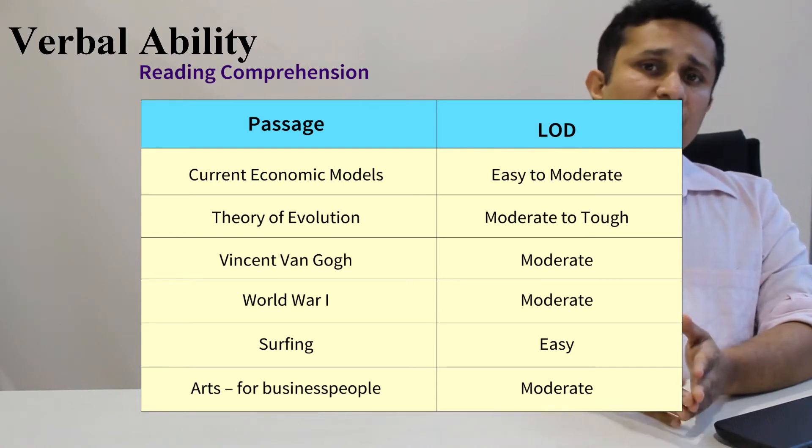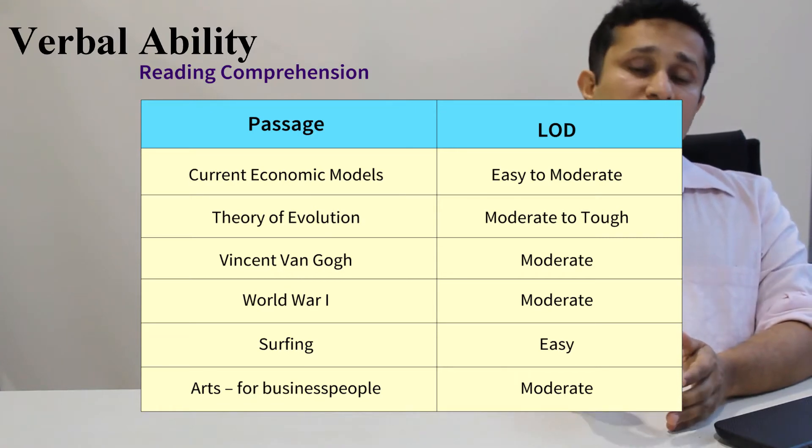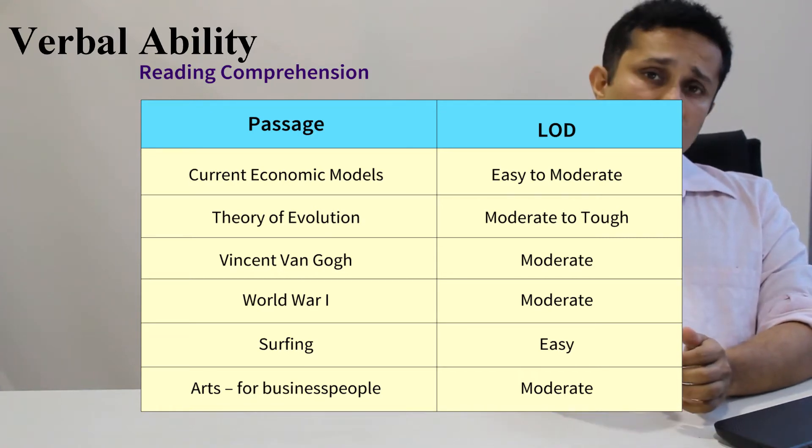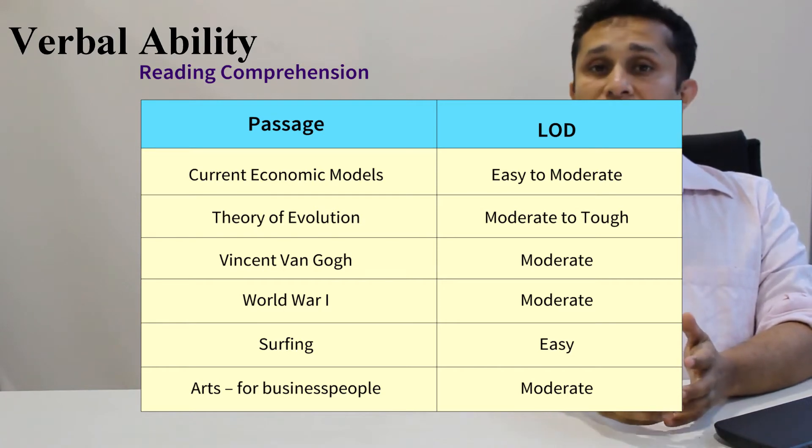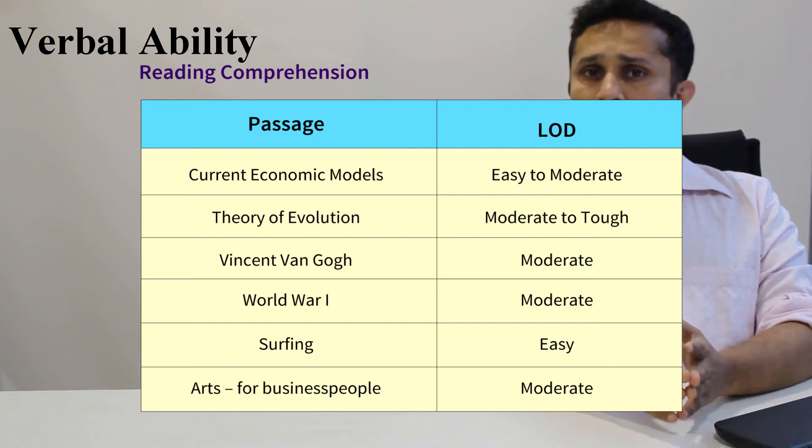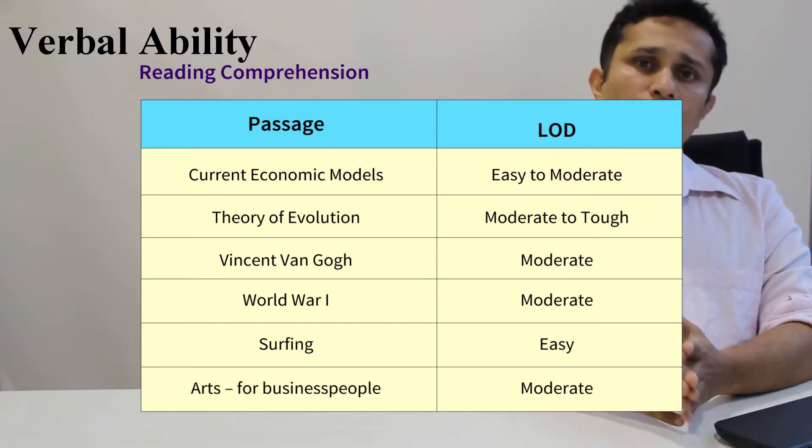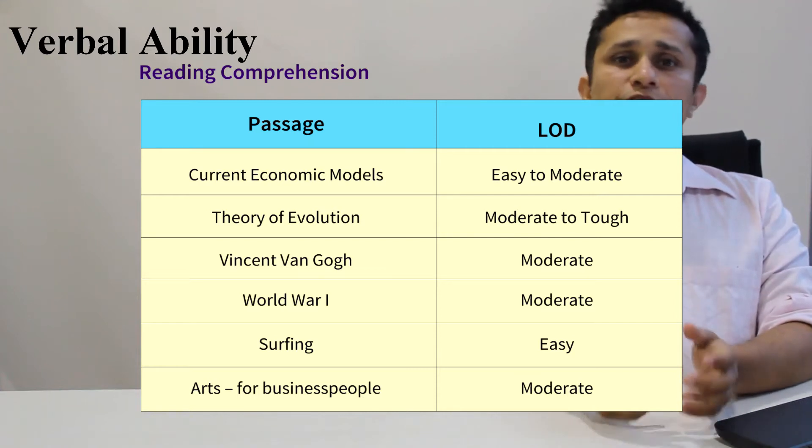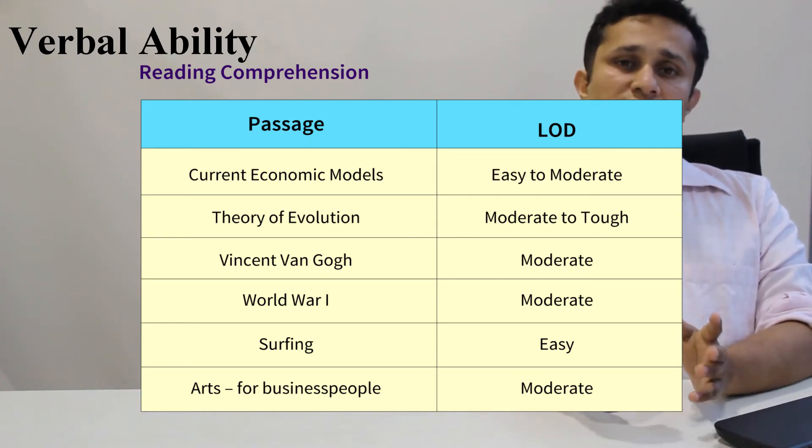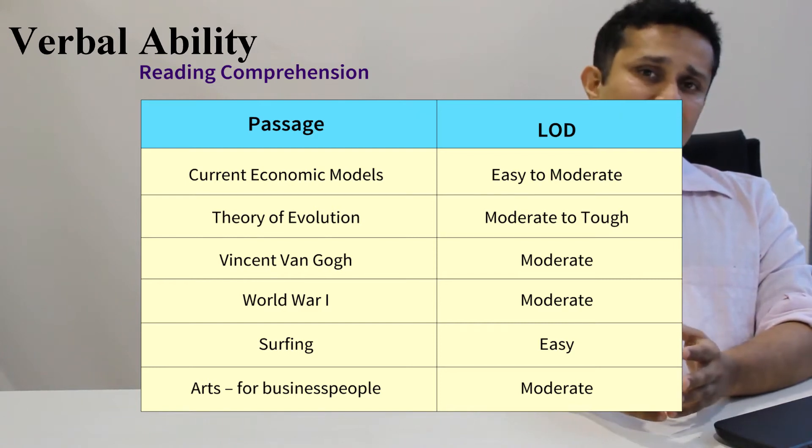Which were the RCs that you should have attempted? There were 2 longish six-question RCs more relevant to European history and European arts. One was on Vincent Van Gogh and one was on World War 1. Both of these were moderate. So you could have taken a choice of any one of these based on your interest and the questions that you found comfortable and tried it.